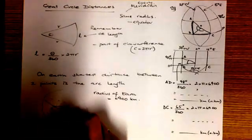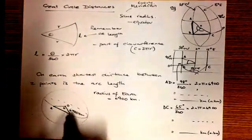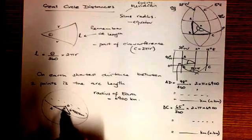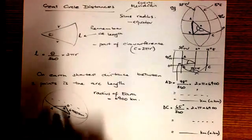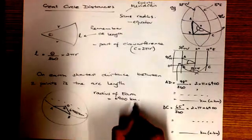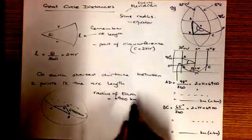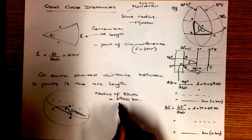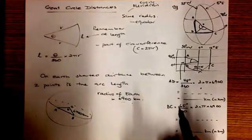We can find the shortest distance between points A and B by finding the angular distance, or the angle that separates them, and using the radius of the Earth. We need to remember that the radius of the Earth is 6,400 kilometres.